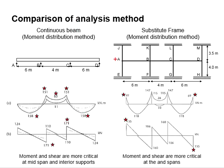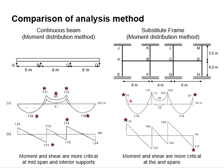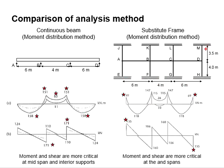The structure comprises a continuous 3-span beam with spans of 6m, 4m, and 6m. There is a column height of 3.5m on top of the beam and 4m below the beam. As the methods used to analyze the structures differ, the calculated values from the analysis methods also differ, as does the total amount of information that can be extracted.